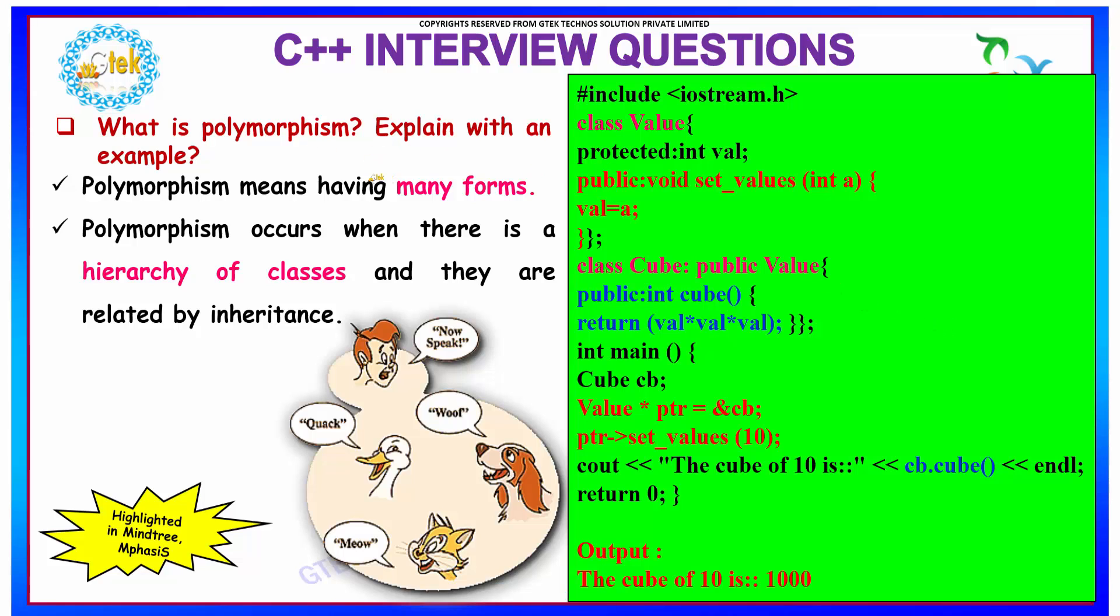What is polymorphism? Explain with an example. The answer is, polymorphism means having many forms. Your same code can be used in many forms.